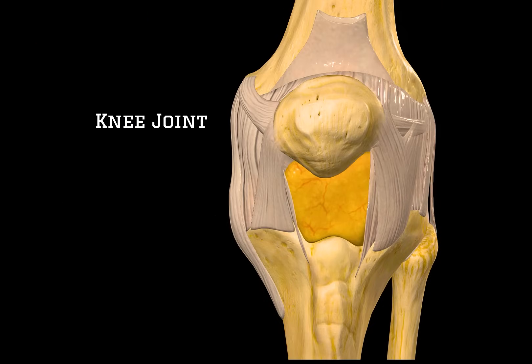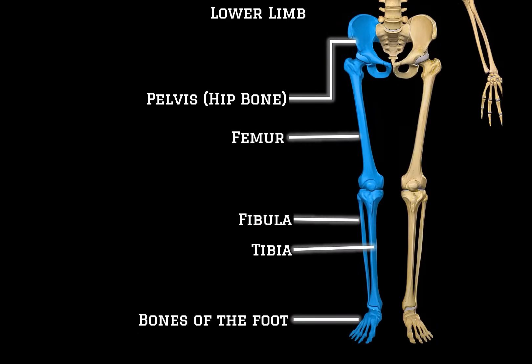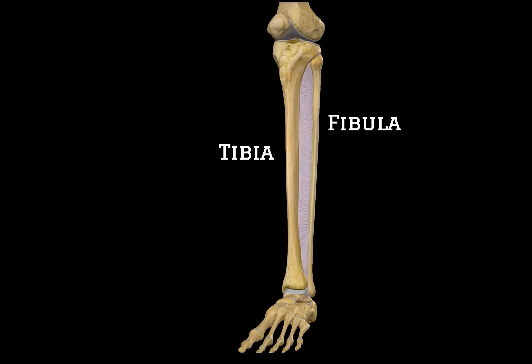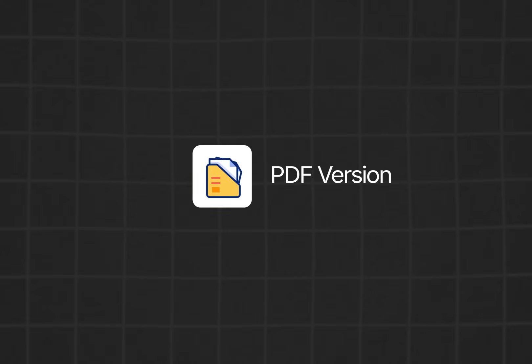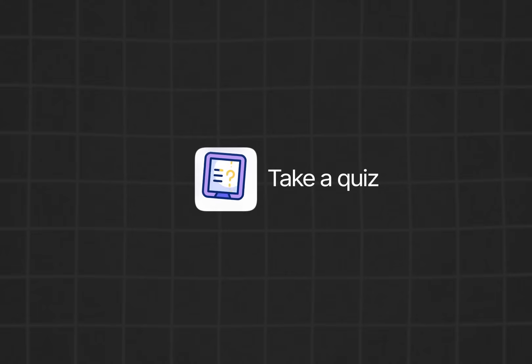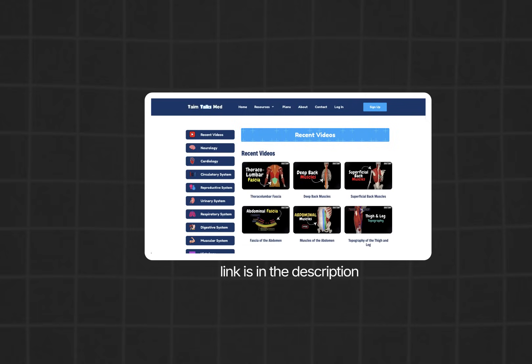That was everything on the knee joint — I really hope it all made sense. In the next video in the lower limb skeletal series, we are going to talk about the tibia and the fibula, how they are shaped, what joints hold them together, and what muscles attach here. Click the next video to continue learning. If you want a handmade PDF version of this lecture, a quiz to test your knowledge, or access to an organized list of all my videos, you can find everything on my website. Thanks for watching — see you in the next one.